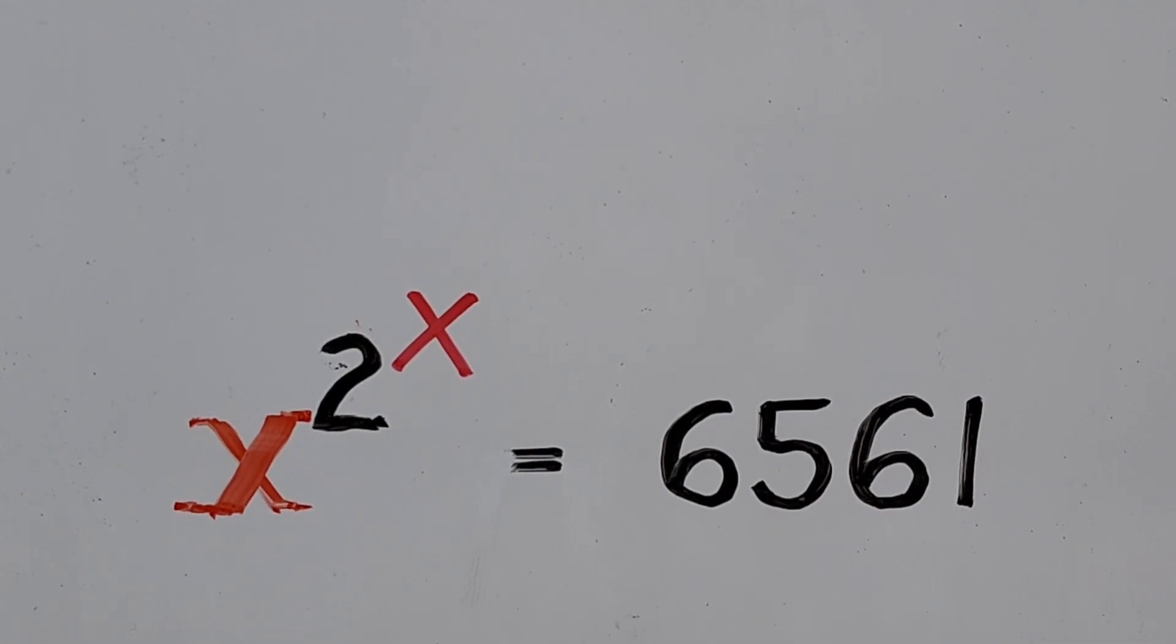Hello everyone, we have the given exponential equation x to the power of 2 to the power of x equals 6561. In this video we'll be solving for the value of x. How are we going to solve this kind of equation? What do you think will be the best way to do it?